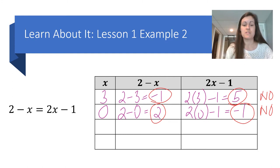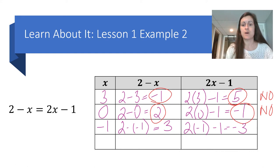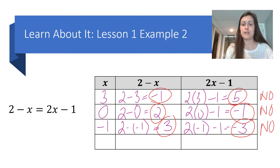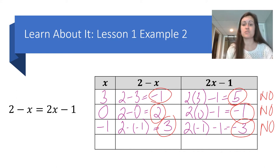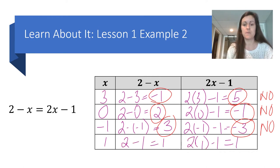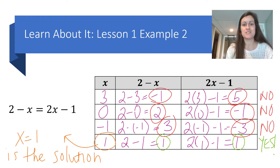I'm going to pick another number — this time negative 1. 2 minus negative 1 is 3, and 2 times negative 1 minus 1 is negative 3. Those outputs are not the same. I can also see that my outputs are getting further apart: there was a distance of 3 between 2 and negative 1, and a distance of 6 between 3 and negative 3. So I know I'm moving further from the solution. My last guess is 1. When I substitute 1 into both expressions, I get the same output — so x equals 1 is the solution.